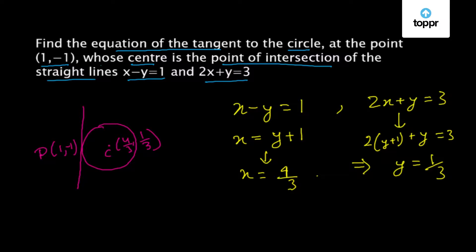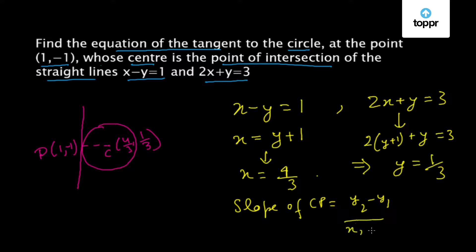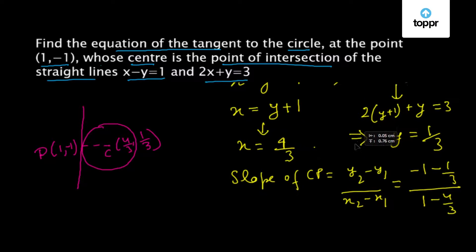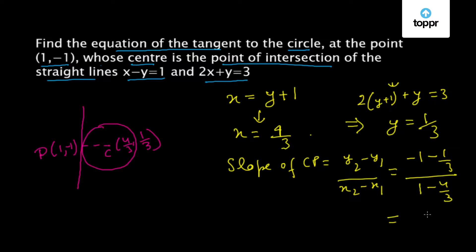Now let us find the slope of CP. The slope of CP equals (y2 minus y1) divided by (x2 minus x1). Here y2 is -1 and y1 is 1/3, and x2 is 1 and x1 is 4/3. Calculating this, we get the slope of CP equal to 4.